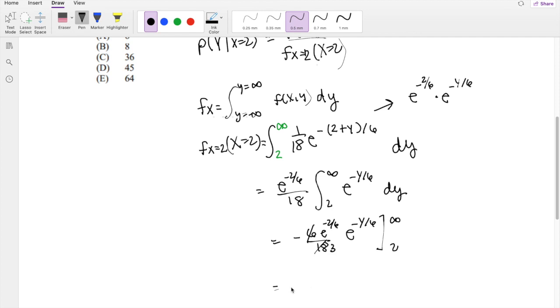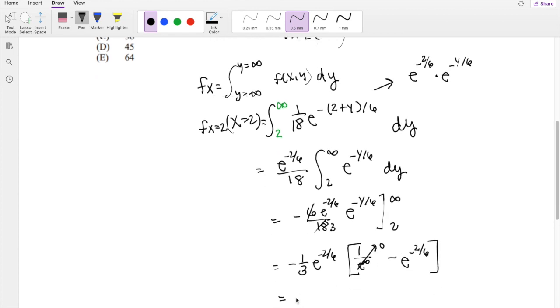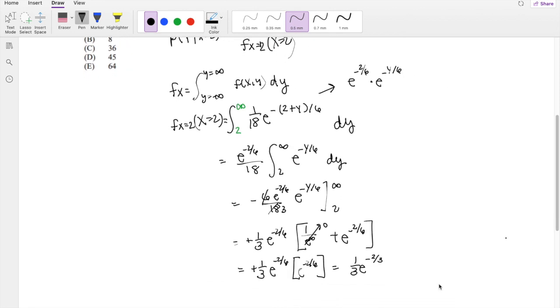When you integrate this, this becomes -1/3 e^(-y/6). When you plug in infinity to this one, you basically are just getting 1 over e to the infinity, so 1 over anything really big just goes to 0. So this is just 0 minus e^(-2/6). This is exactly -1/3 e^(-2/6), but two negatives make a positive, so you get this times e^(-2/6). You can add those together, so you get 1/3 e^(-4/6), which is also the same thing as e^(-2/3). That's what you have in your denominator.